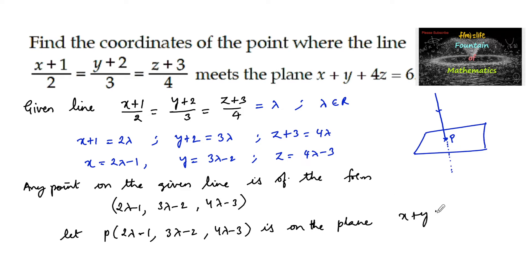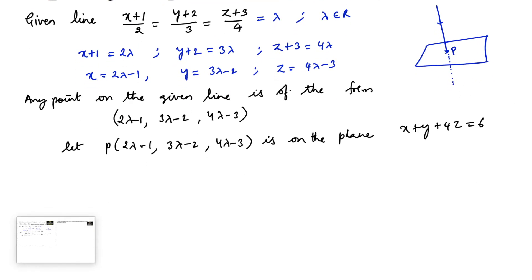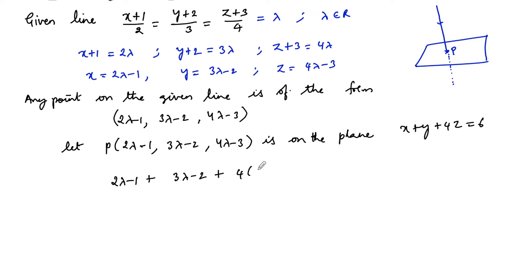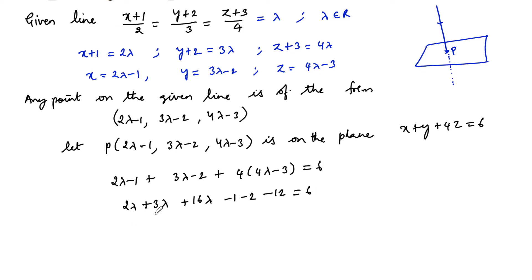Since the point (2λ−1, 3λ−2, 4λ−3) is on the plane x+y+4z = 6, it must satisfy the plane equation. Substituting: (2λ−1) + (3λ−2) + 4(4λ−3) = 6, which gives 2λ + 3λ + 16λ − 1 − 2 − 12 = 6.